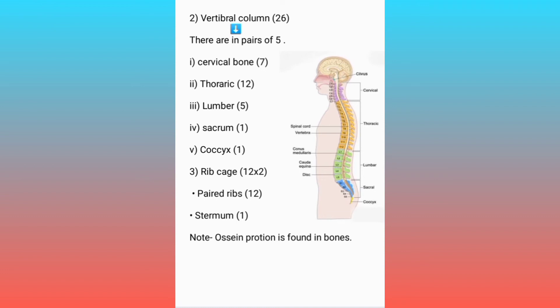Vertebral column: 26 bones total — cervical 7, thoracic 12, lumbar 5, sacrum 1, coccyx 1; 7 plus 12 plus 5 plus 1 plus 1 is equal to 26. Rib cage: paired ribs 12, 12 into 2 is equal to 24, plus sternum 1; 24 plus 1 is equal to 25.